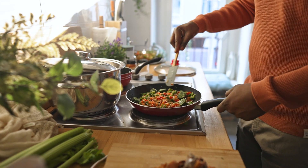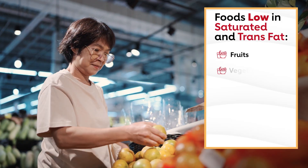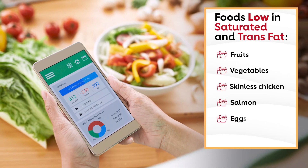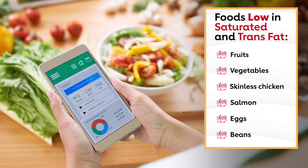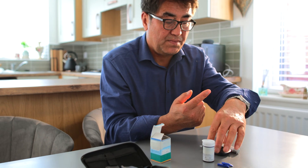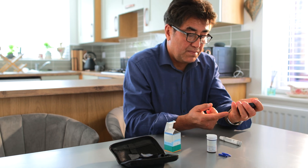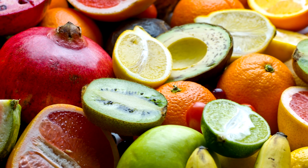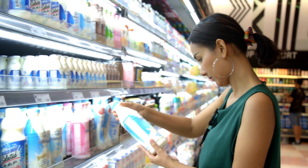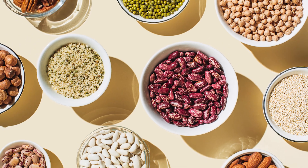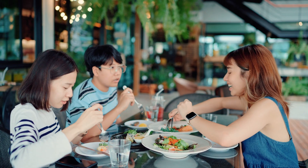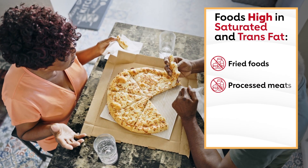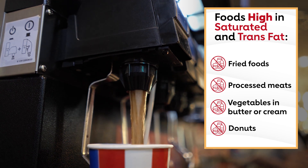A healthy diet is another way to prevent or treat PAD. Many people with PAD have elevated cholesterol levels, so eating a diet low in saturated and trans fat can help lower blood cholesterol levels. For those with diabetes, a healthy diet can help manage diabetes and maintain a healthy weight. Aim for a diet that emphasizes fruits, vegetables, and whole grains. Include low-fat dairy products, poultry, fish, legumes, nuts, seeds, and non-tropical vegetable oils such as olive oil. Limit sodium, saturated and trans fats, added sugars, sugar-sweetened beverages, and red meat.